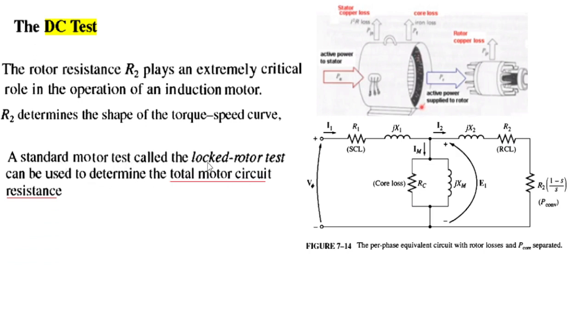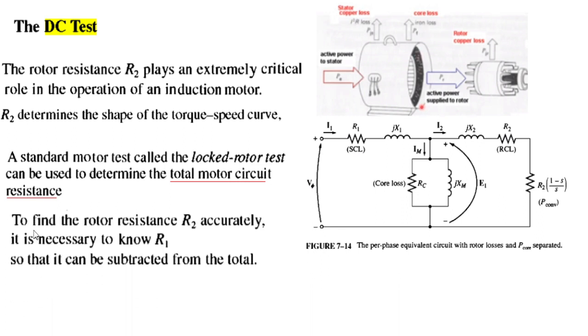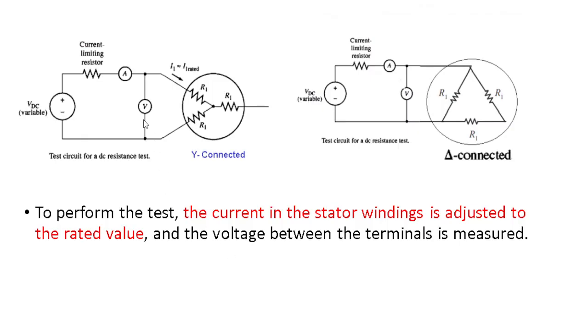A standard motor test called the locked rotor test can be used to determine the total motor circuit resistance. Once we know the total resistance and R1, we can calculate R2. To find the rotor resistance R2 accurately, it is necessary to know R1 so that it can be subtracted from the total.